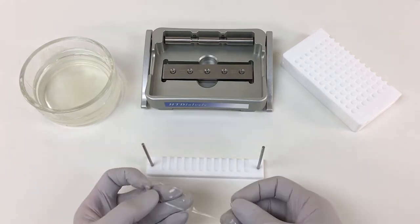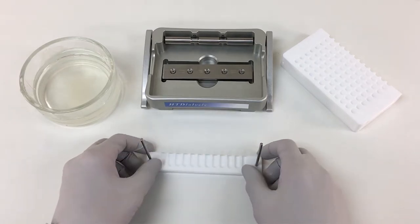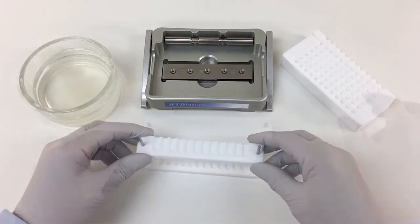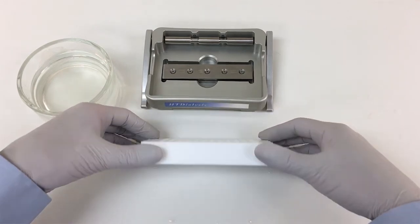To assemble the Teflon block, begin with the bar labeled A. Place a single membrane on the bar, cover with bar B, and repeat ending with bar I.